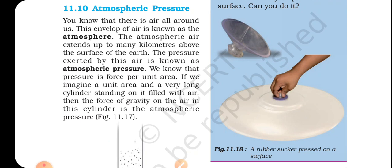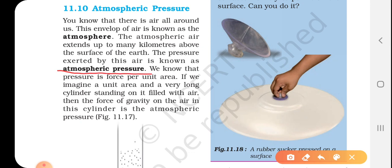We all know that there is a blanket of air around us, and this blanket of air around us is known as the atmosphere. The atmospheric air extends up to many kilometers above the surface of the Earth. The pressure exerted by this air is known as atmospheric pressure. So the blanket of air around us is known as the atmosphere, and this air also exerts pressure. The pressure exerted by the blanket of air present around us is known as atmospheric pressure.